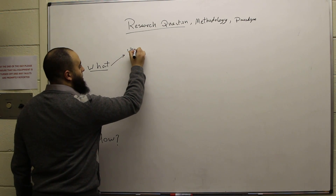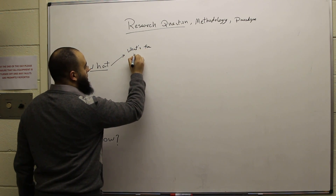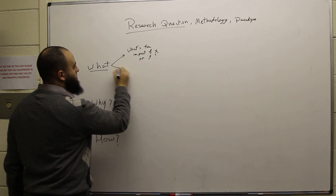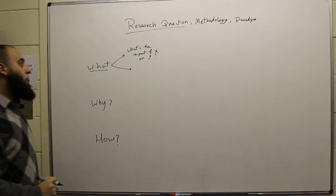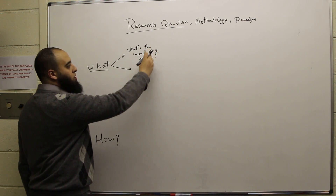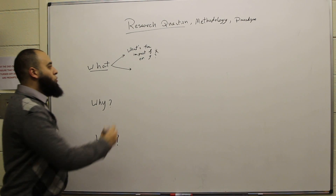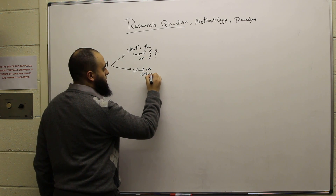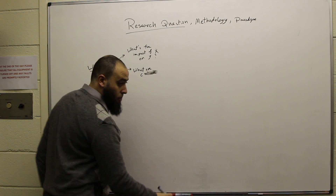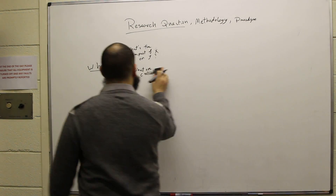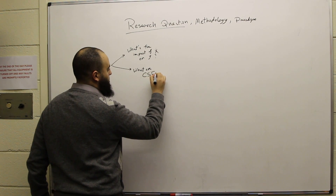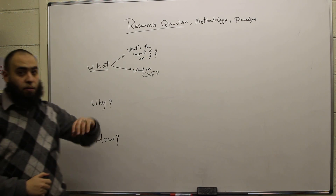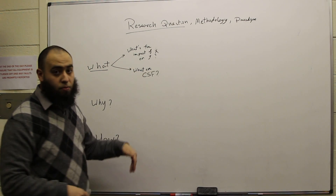Under 'what' questions, we have: What is the impact of X on Y? What is the role of X on Y? For example, X is human resource development and Y is business innovation. Second, what are the critical success factors? There are more example questions available on the blog, so you can go there to see more.